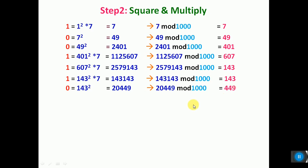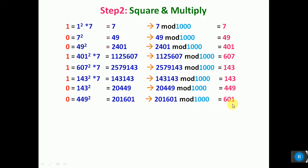The next bit is 0 again. So you don't have to multiply — just square under mod 1000. Square of 449 is this number, and under modulo 1000 it is 601. The next bit is 0 again, so the previous number 601 is squared, and mod 1000 gives 201. The next bit is 0 again.